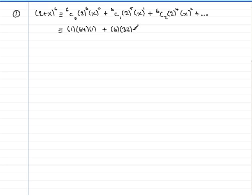That's the second term done. Moving on to the third and final term, 6C2, you probably need the calculator for this. So if you type that in, 6C2 should give you 15, and then it's going to be multiplied by 2 to the 4, which is 16, and then x squared.